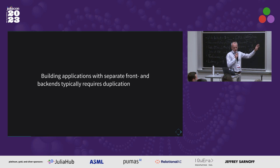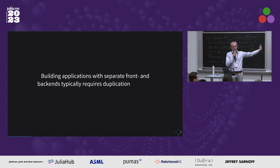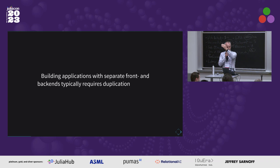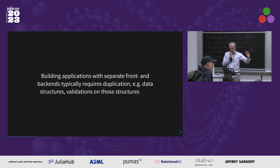When I'm building applications with separate front end and back ends, they typically require a lot of duplication. I have constraints on code in my back end, on types in my back end, and then I need to replicate that in the front end because I want my inputs to have validation and stuff like that. It's just annoying — I need to copy data structures around, impose validations on those structures, et cetera.